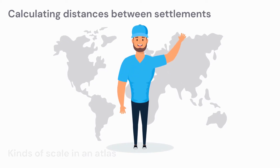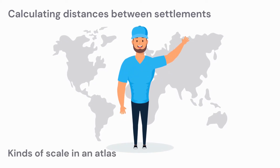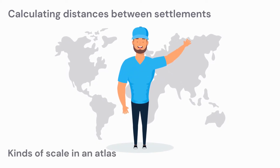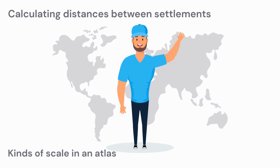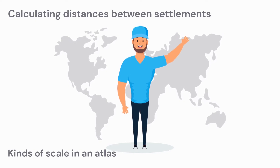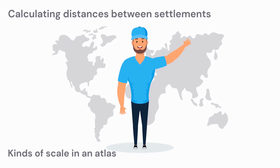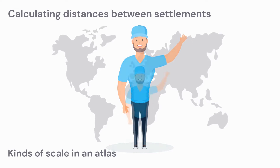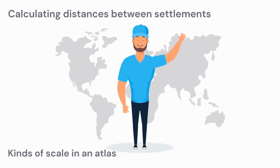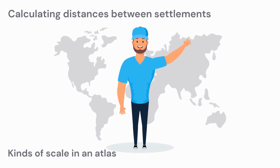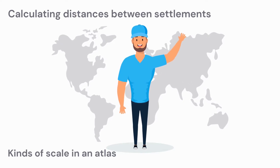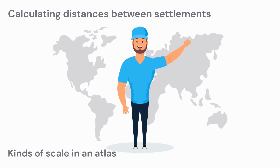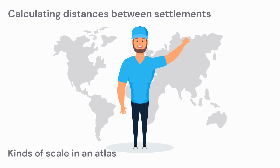We are going to look at the different kinds of scales you will find in an atlas. These scales include world, regional and local scales. We will also look at line scales, word scales and ratio scales. We will then look at how you can calculate distances between settlements using different scales.